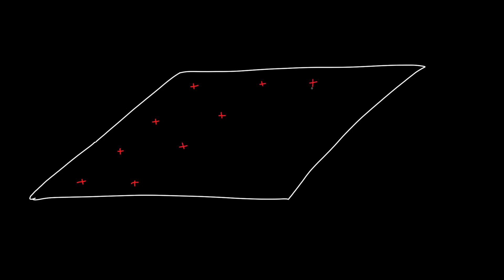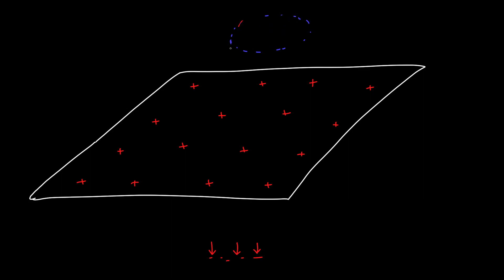Let's redraw our plane nice and big. This plane has some positive charge on it, so it has a charge density sigma. The first thing we need to ask when using Gauss's Law is: what kind of Gaussian surface do I want? We know that above the sheet the electric field points up and below it points down. So as long as we have a surface that is flat on the top and the bottom, we should be good. I'm going to choose a cylinder — it's a nice simple surface with only three sides: a top, a bottom, and the wraparound side.